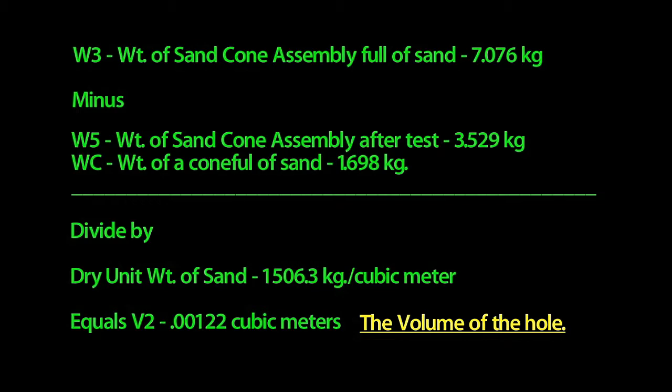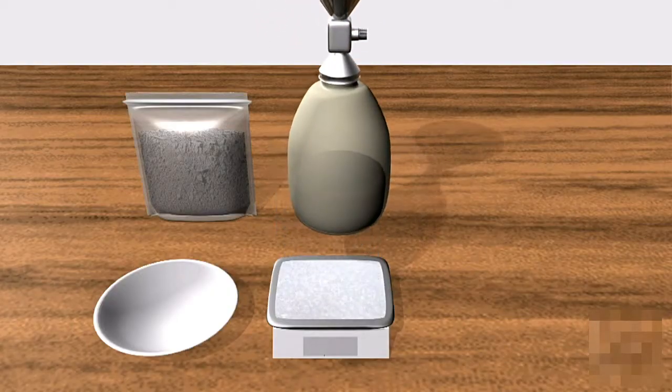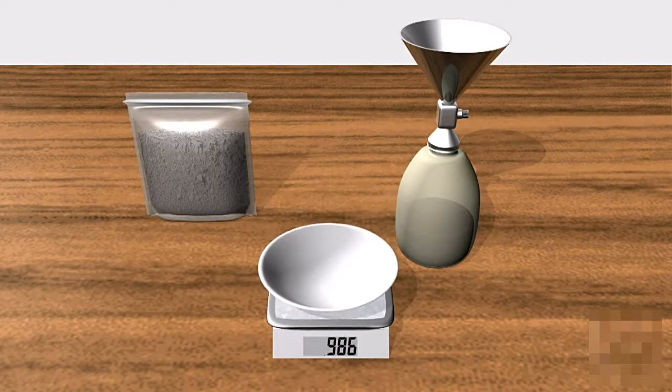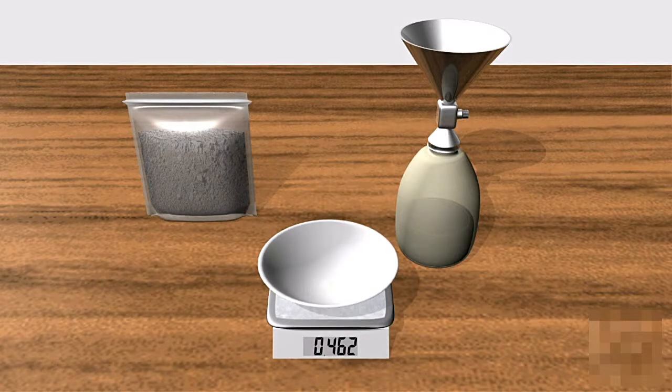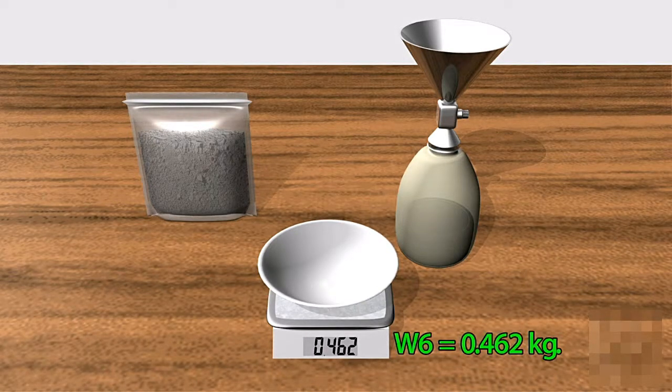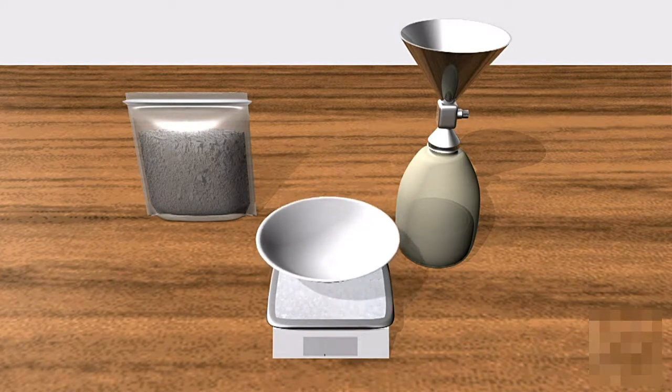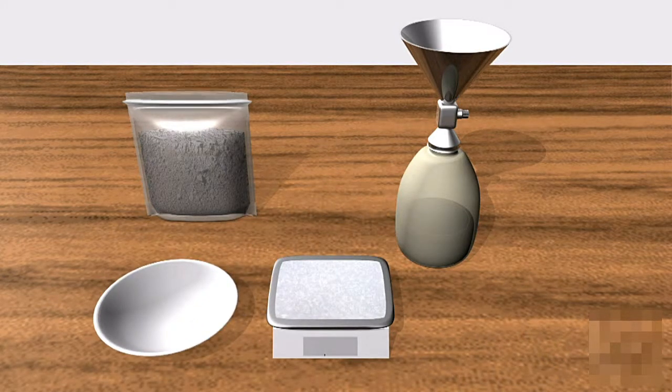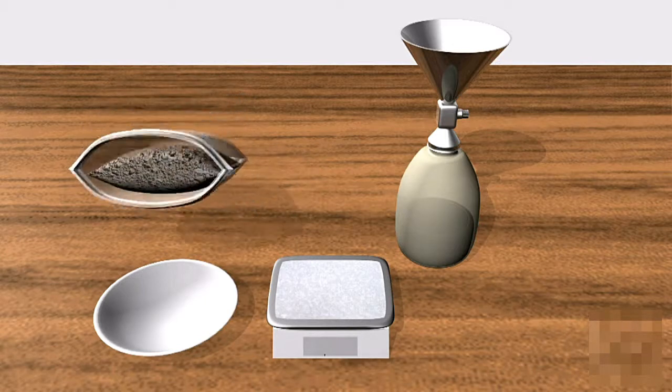Our final calculations will require another series of weighing. We'll start with the evaporating dish, it weighs 0.462 kilograms, we'll call this W6. We then put all of the collected soil into the dish and weigh this. We get 2.723 kilograms, this is W7.